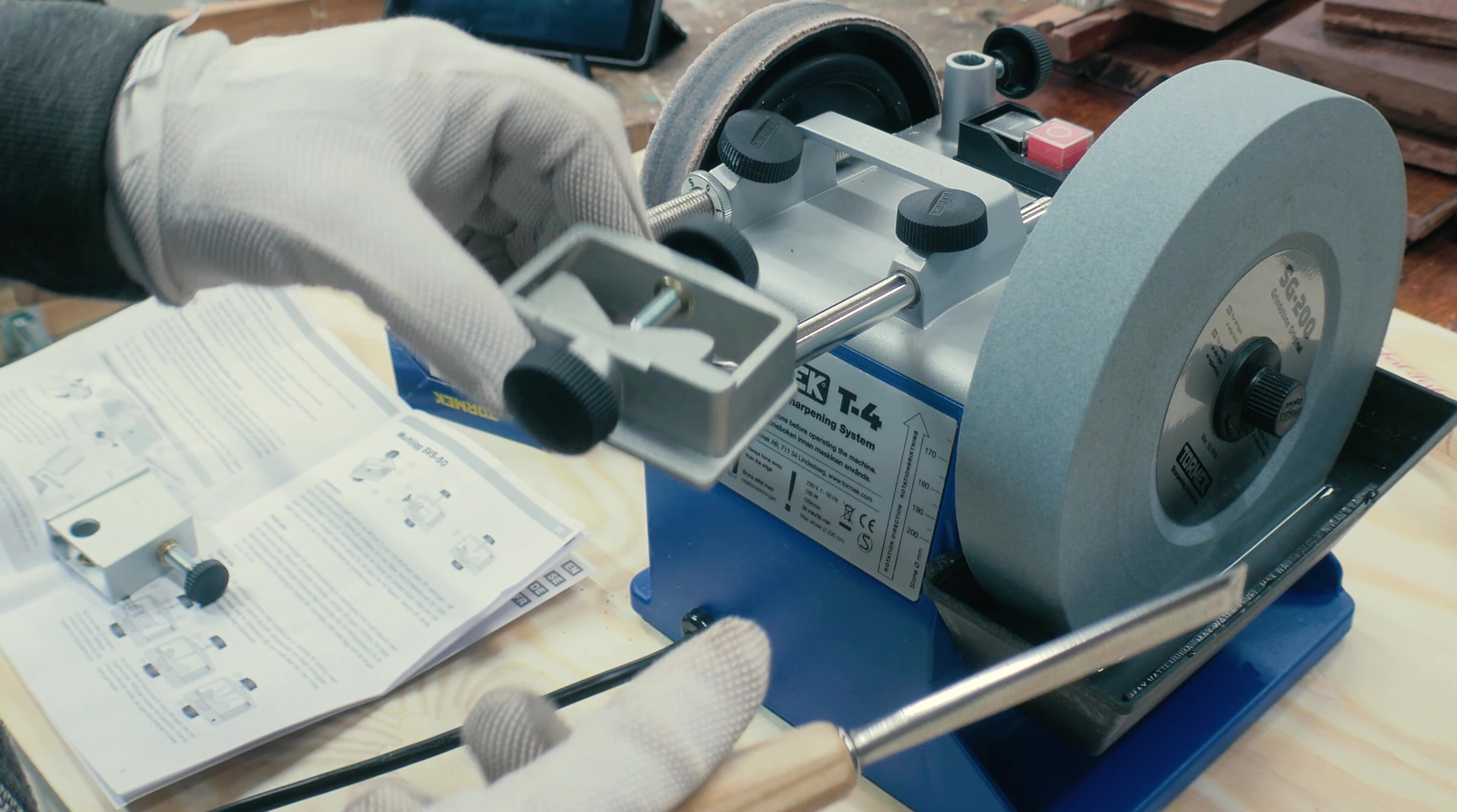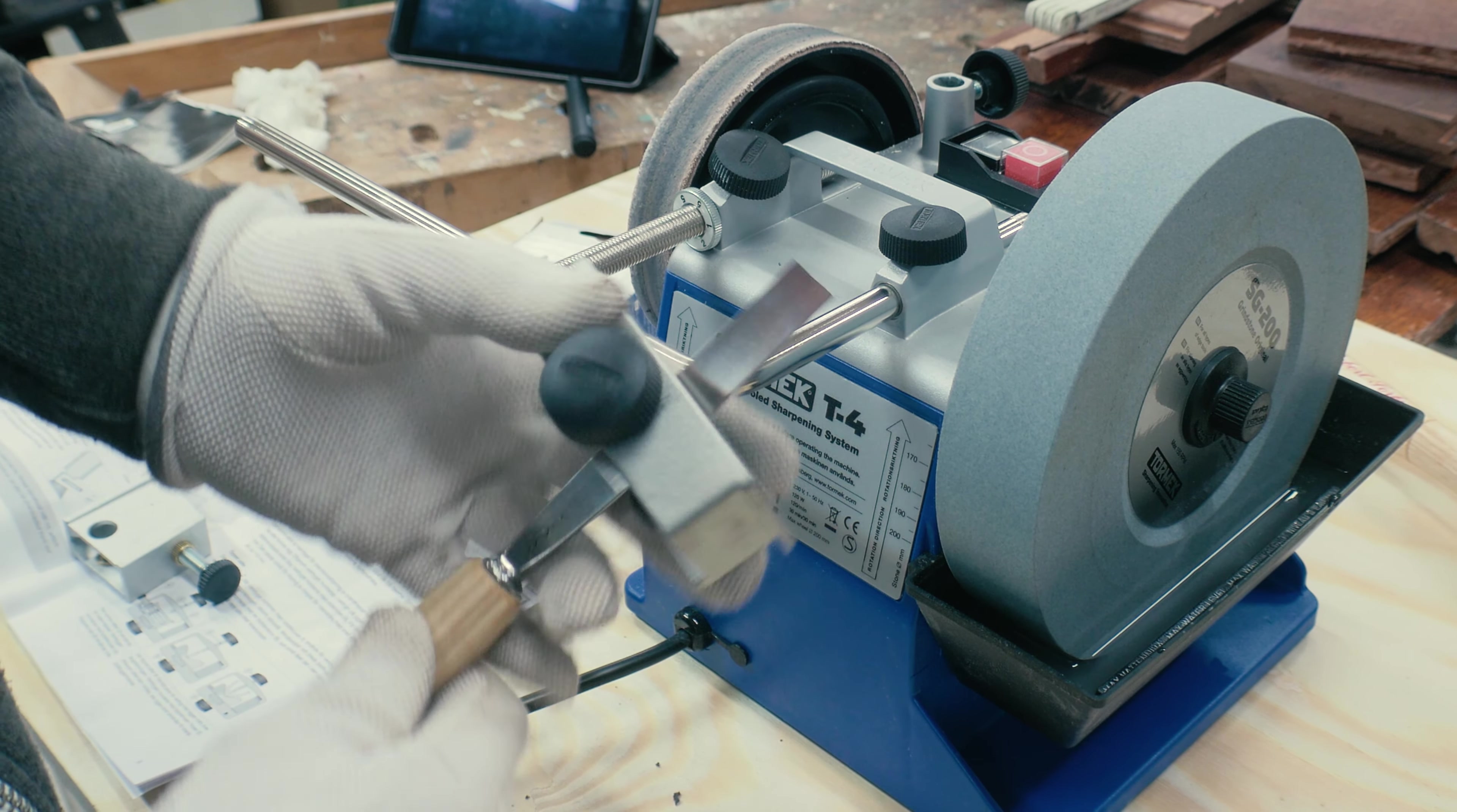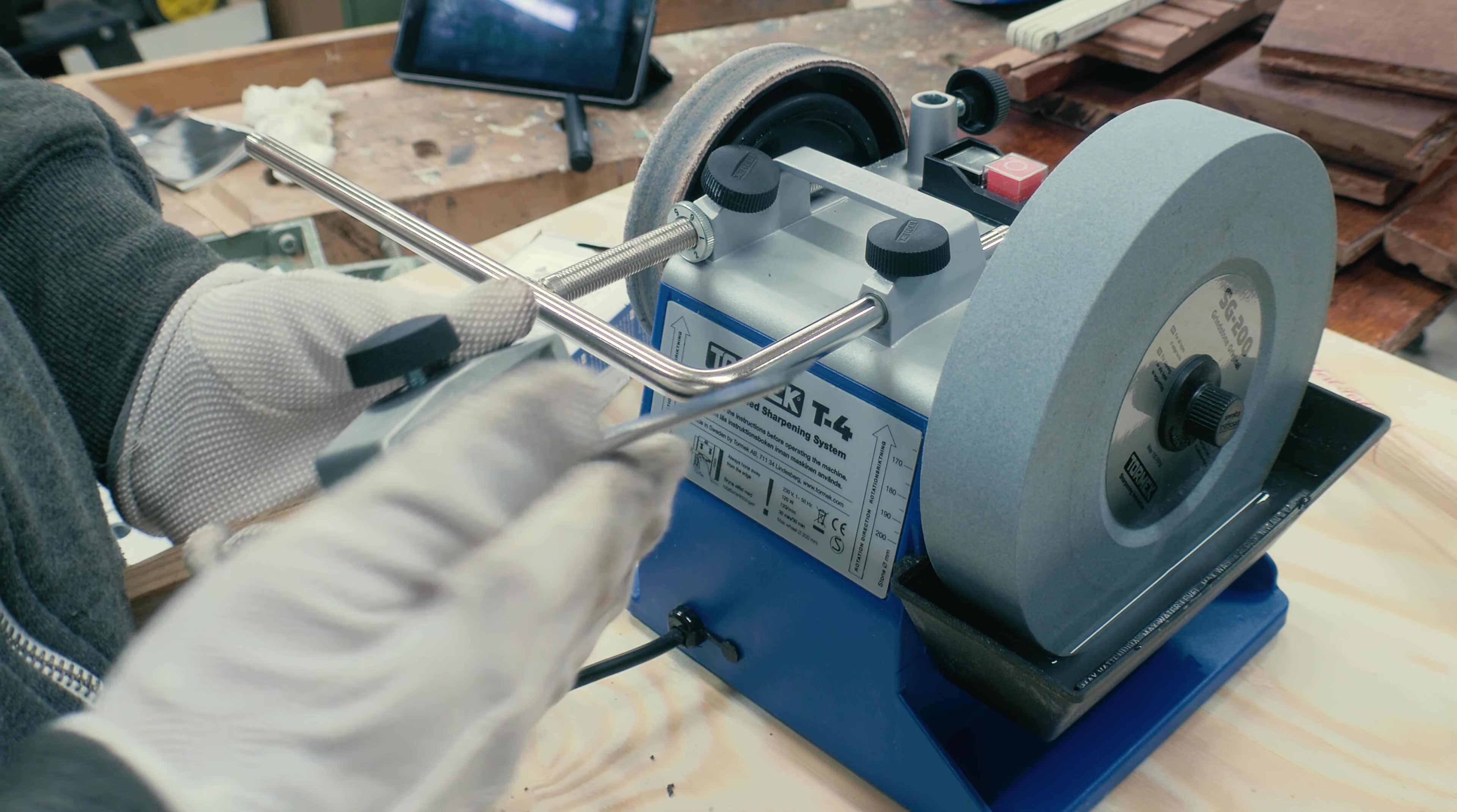I'm using the jig in the same configuration to sharpen this straight edge chisel. Just putting the chisel in like so and attaching it straight to the jig here and here.